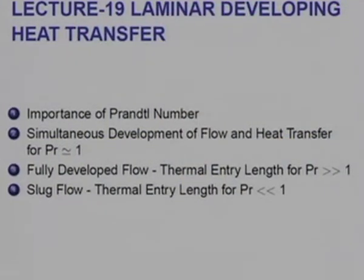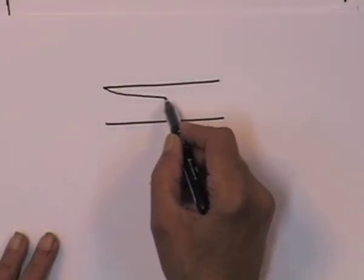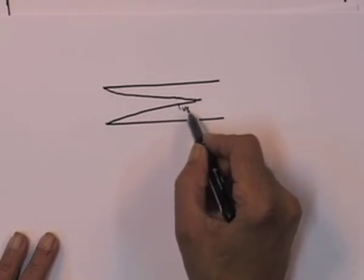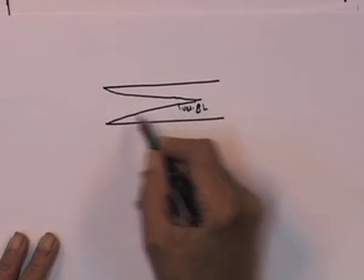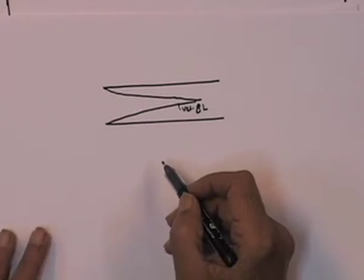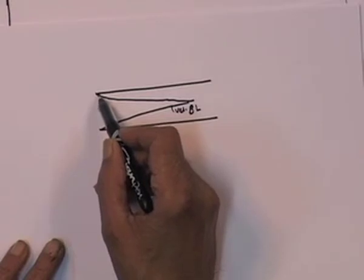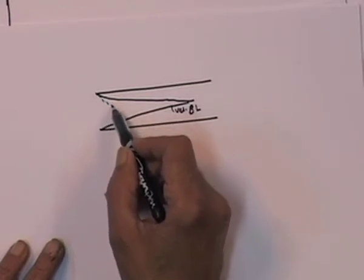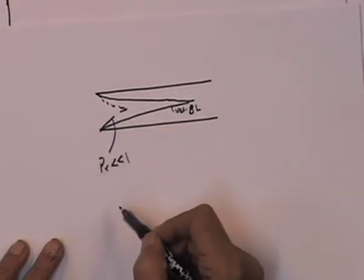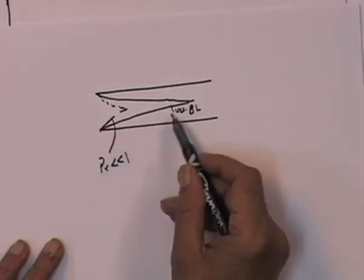As you will recall, in the entrance region of a duct, the velocity profile develops like so. This is the velocity profile. The velocity boundary layer will develop like so, but the temperature boundary layer development would be governed by the value of Prandtl number. So if Prandtl number is very small, you will get very rapid development. This is for Prandtl number very much less than 1, because the thermal boundary layers will develop much faster than the velocity boundary layer.